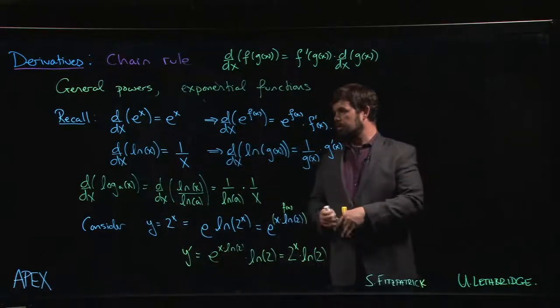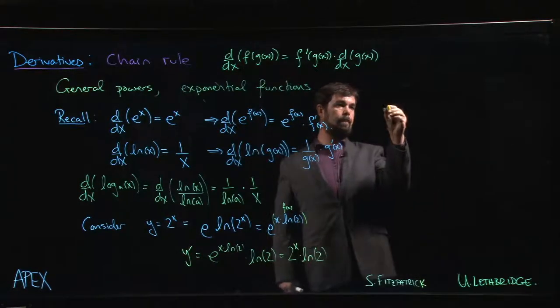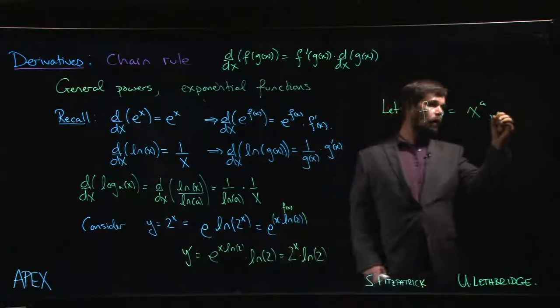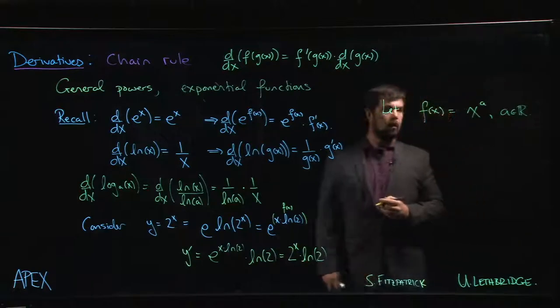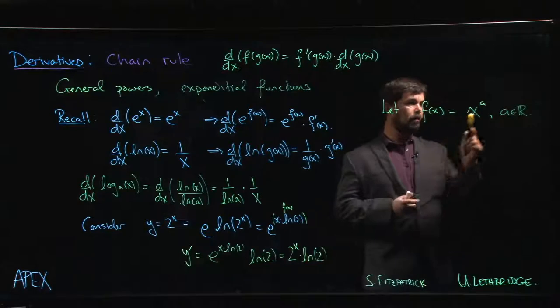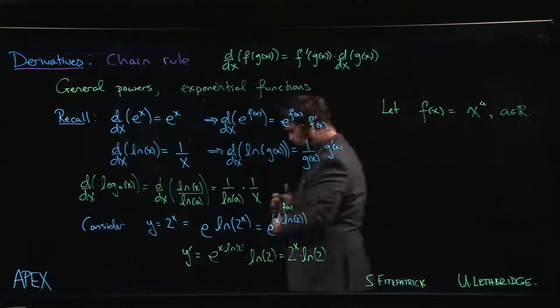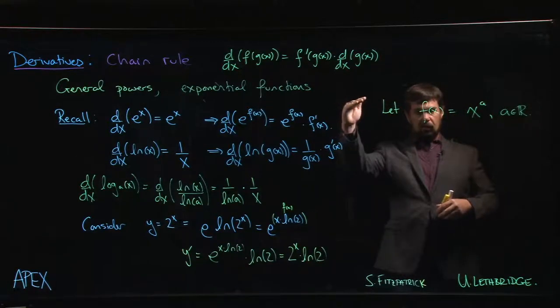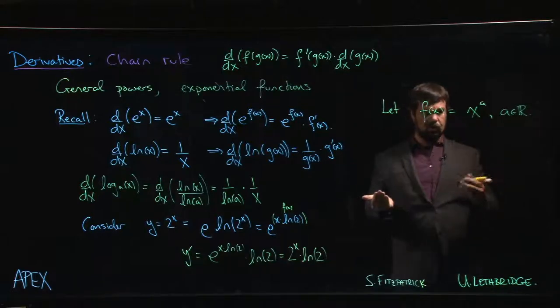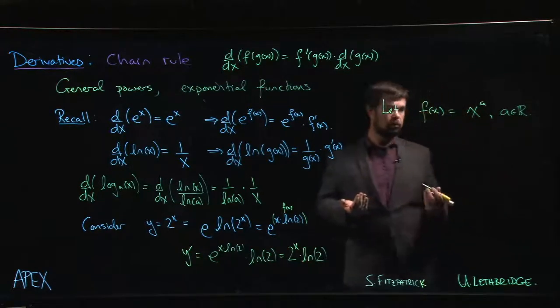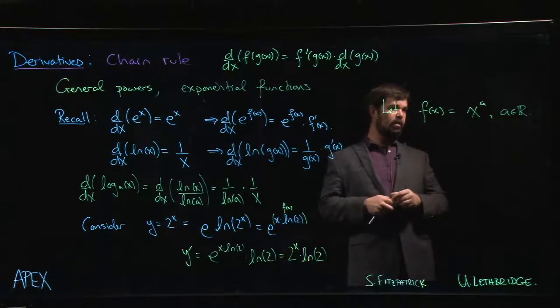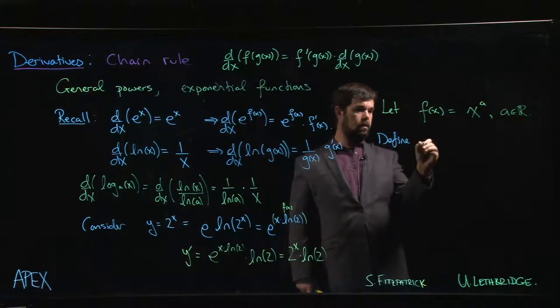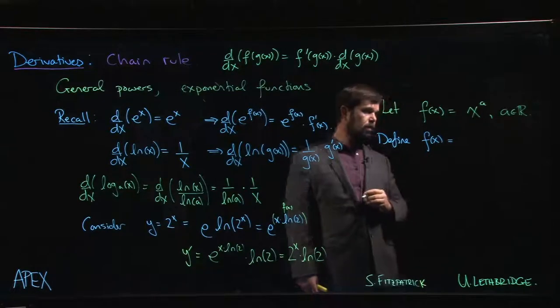Now, there's one other related thing that we can do here, which is if we let f of x equal x to the a, where a is any real number. Well, how do you define this function? How do you define powers which are real numbers? We know how to do integer powers. We even know how to do rational powers. Because if we have a rational power, we know that the numerator is going to be a power, the denominator is a root, and it doesn't matter which order you do those in.